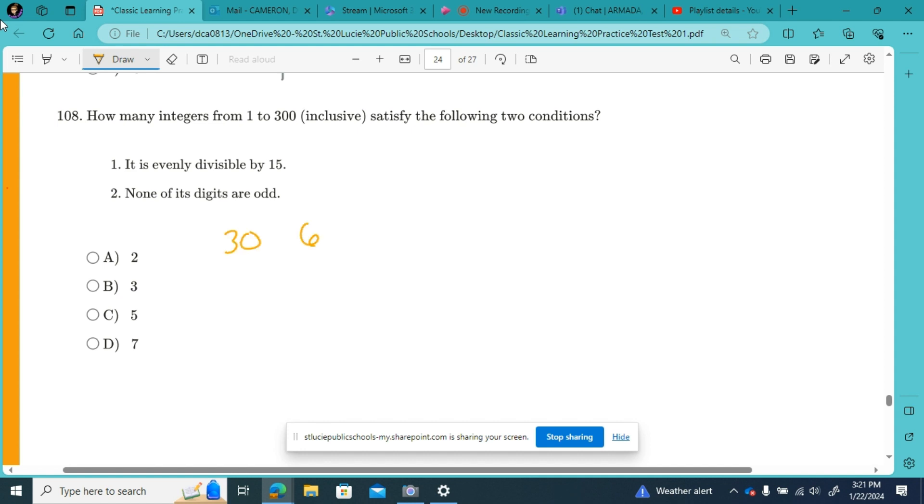30, 60, 90, 120, 150, 180, 210, 240, 270, 300. And now just cross out the ones that have an odd digit, because we're not allowed to have any odd digits. You've got a 3, you've got a 9, you've got a 1, you've got a 1, got a 1, got a 1, got a 7, got a 3. So we only have 2.